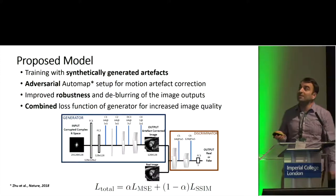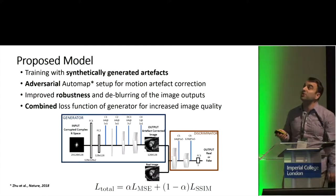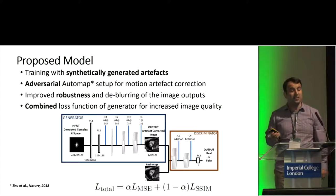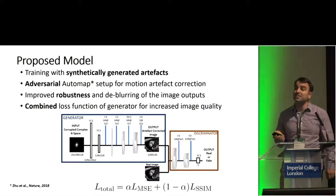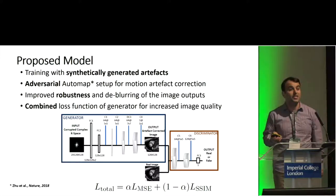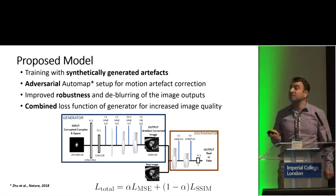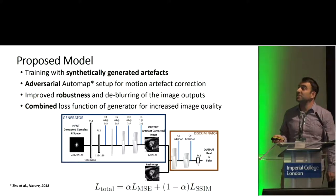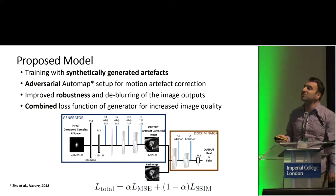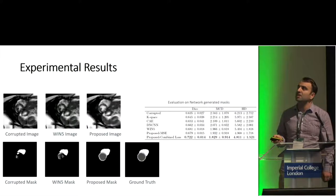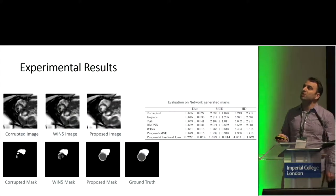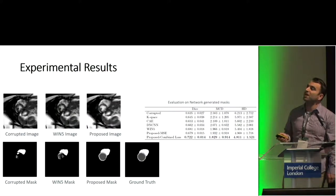Moreover, we add a discriminator term to enable adversarial training to improve robustness and deblurring of the image output. Our generator also uses a combined loss function composing of mean square error and structural similarity losses.